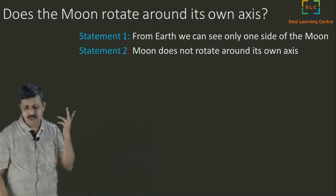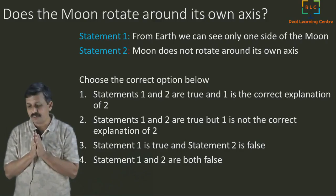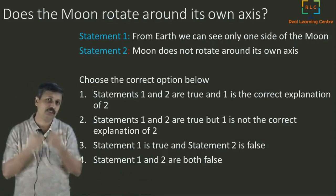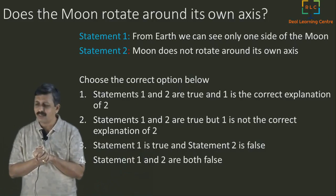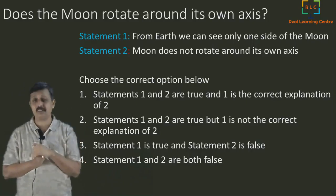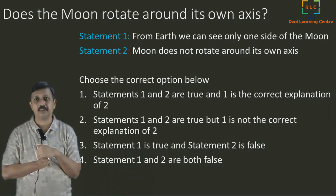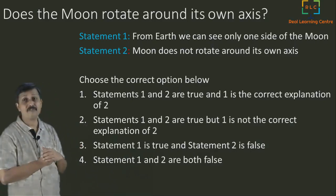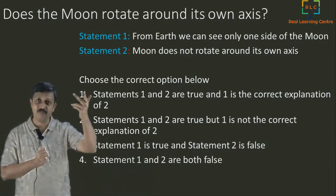I am presenting four choices here — let us see which is correct. The first choice is that statement one and two are both true, and one is actually the correct explanation for two. The second choice is that one and two may both be true, but one is not the explanation of the other — maybe my logic is wrong even if both statements are right. The third choice is that statement one is true but two is false. The fourth is that both one and two are false. I can't believe both are false, since we have the data that we only see one side of the moon.